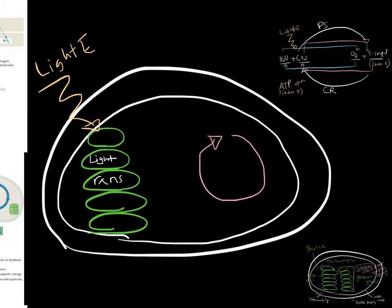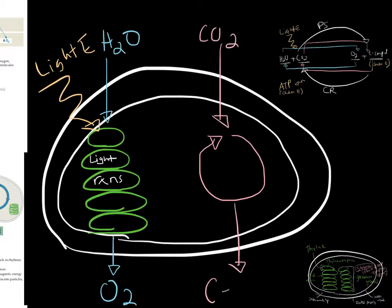This side, because it depends on light directly, we call the light reactions. In the light reactions, water comes in as the input, and oxygen is the output. The other stage has CO2 as the reactant coming into the cycle, and the output is our carbon compound, our food.